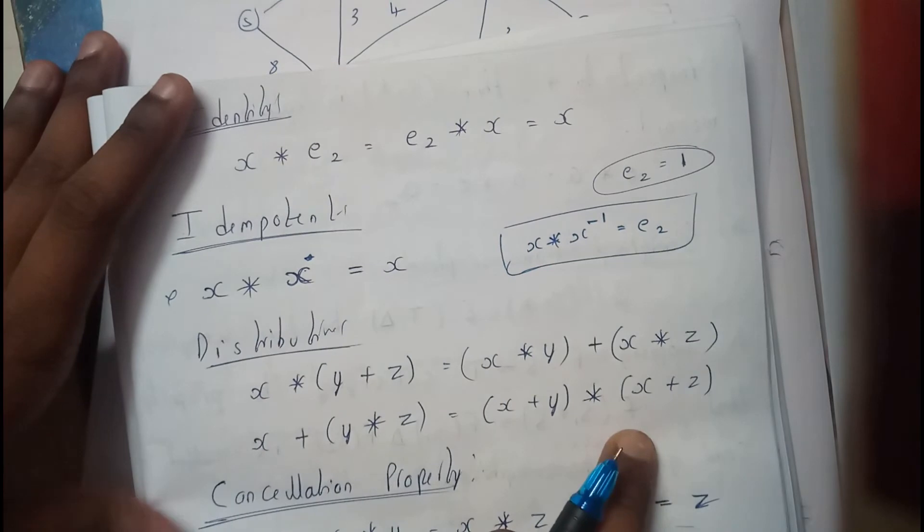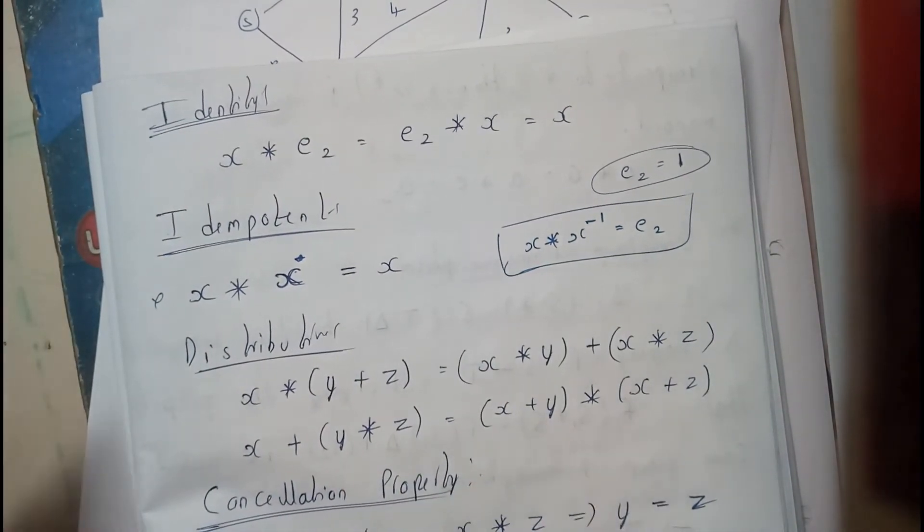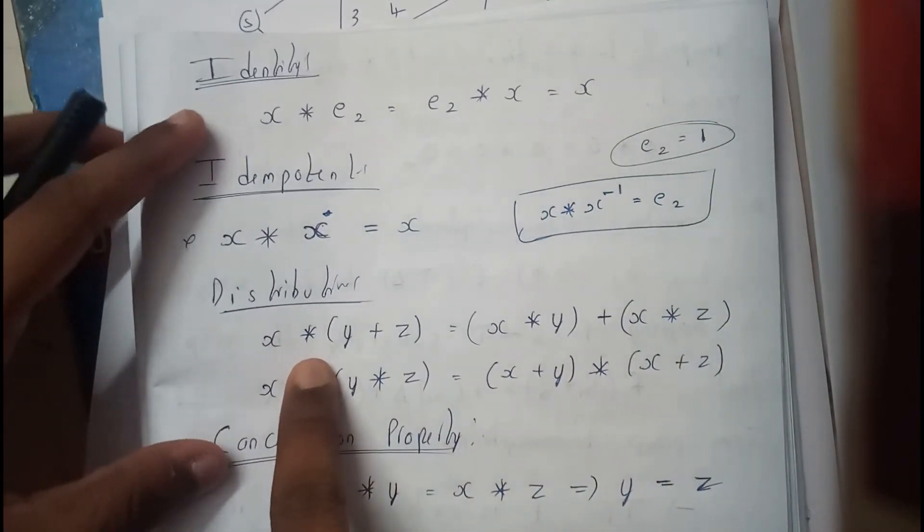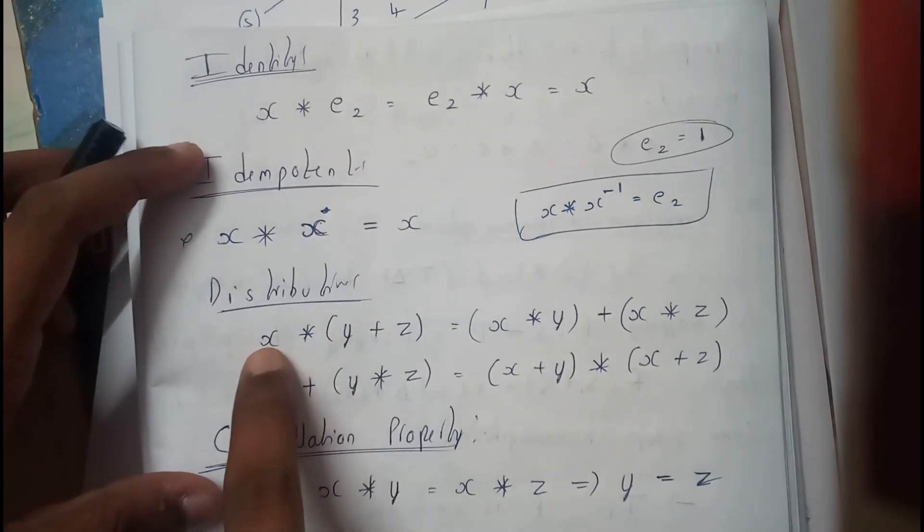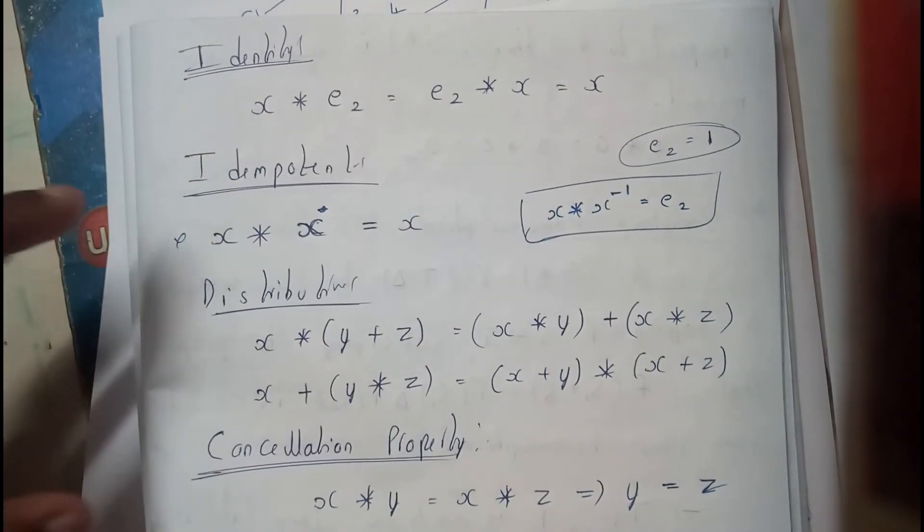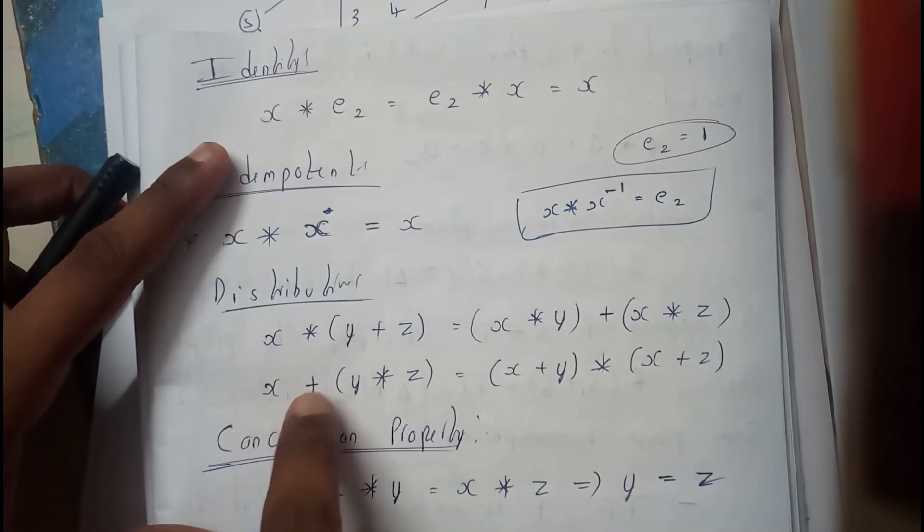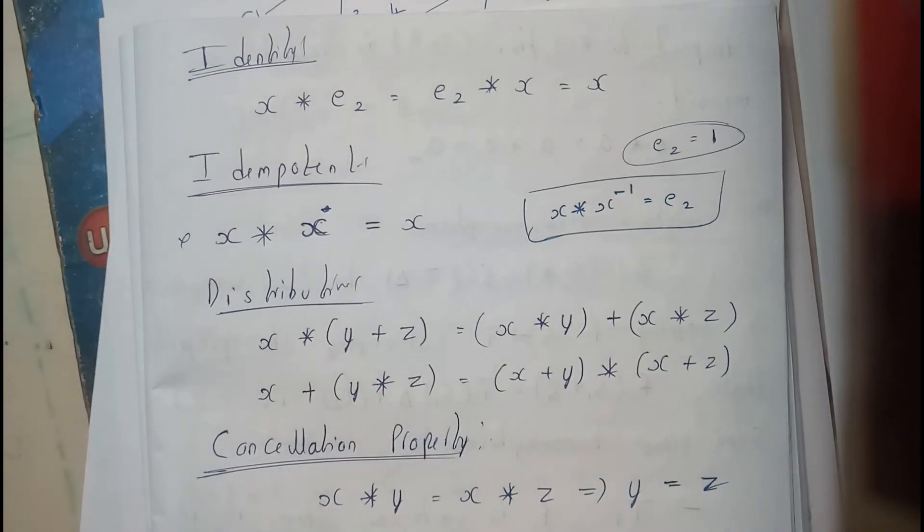Distributive: I think everyone knows this law. This is a successful law for any kind of numbers. x * (y + z) equals (x * y) + (x * z). That's really simple. (x + y) * z equals (x * z) + (y * z). Really simple, guys.